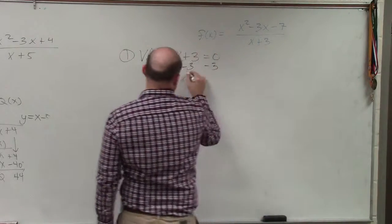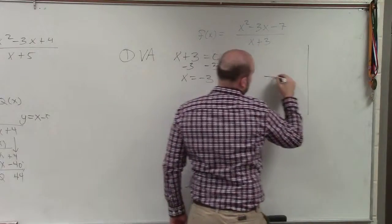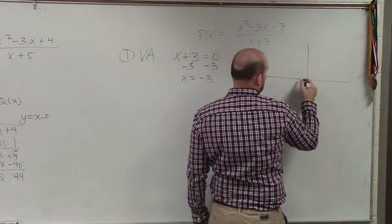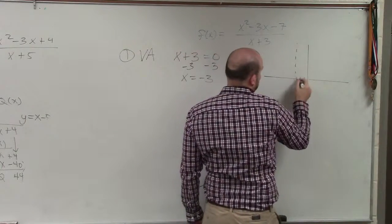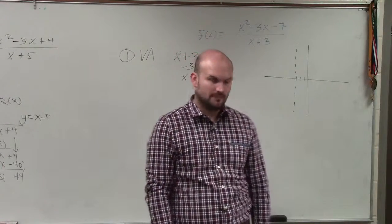All you guys have to do is set your denominator equal to 0. Subtract 3, subtract 3. x equals negative 3. So I immediately plot my x in an asymptote. Okay? Everybody follow me?